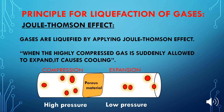When the gas molecules are allowed to pass through this porous material or through a small nozzle towards the low pressure region, they expand and move far apart from each other, with an increase in kinetic energy. During free expansion, the compressed gas molecules use their own energy to overcome attractive forces and become separated. When the energy of the gas molecules decreases, the gas cools, and after several cycles of compression and free expansion, the gas changes into the liquid state.